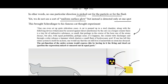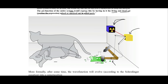I'll read the famous cat thought experiment in full: 'One can even set up quite ridiculous cases. A cat is penned up in a steel chamber along with the following device, which must be secured against direct interference by the cat. In a Geiger counter there is a tiny bit of radioactive substance, so small that perhaps in the course of one hour one of the atoms decays, but also with equal probability perhaps none. If it happens, the counter tube discharges and through a delayed release a hammer shatters a small flask of hydrocyanic acid. If one has left this entire system to itself for an hour, one would say that the cat still lives if meanwhile no atom has decayed. The psi function of the entire system would express this by having in it the living and dead cat parts of the expression mixed or smeared out in equal parts' — the cat being simultaneously dead and alive.